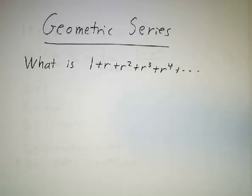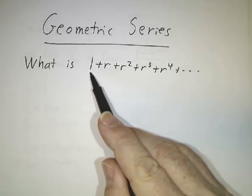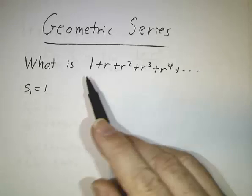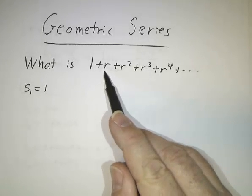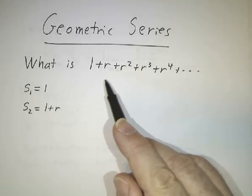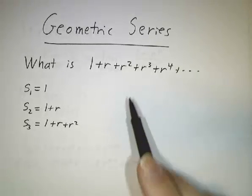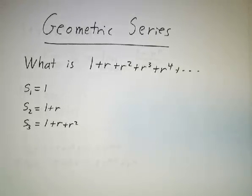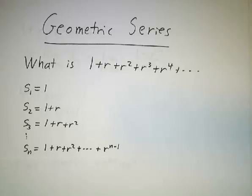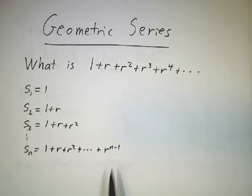Let's start computing our partial sums. The first term is 1, then we add r to get 1 plus r. Add r squared to get 1 plus r plus r squared. In general, S_n is going to be 1 plus r plus r squared, up to r to the n minus 1. That's n terms.